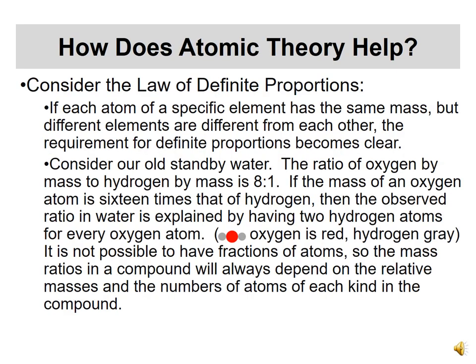How does the atomic theory help us? Consider the law of definite proportions — that compounds like water always have two hydrogens and one oxygen, and carbon dioxide always has one carbon and two oxygens, with no variation. Looking at water: the ratio of oxygen to hydrogen by mass is always 8 to 1. Since the mass of an oxygen atom is 16 times that of hydrogen, and a water molecule has one oxygen and two hydrogens, this ratio is explained. We can't have fractions of atoms, so compounds always form in these nice whole-number ratios.